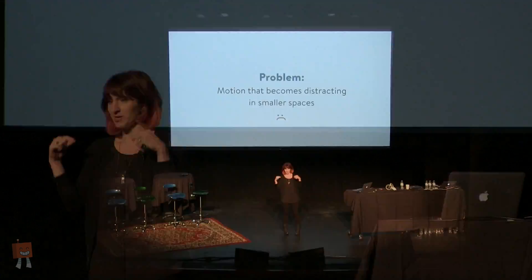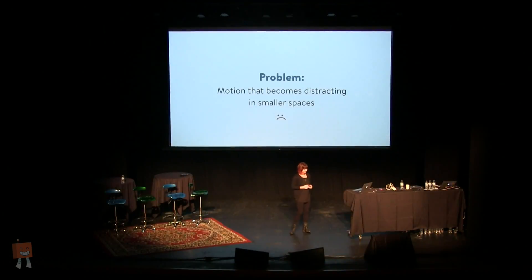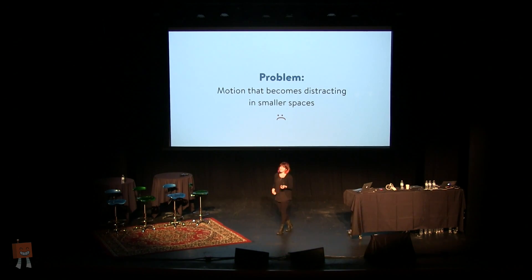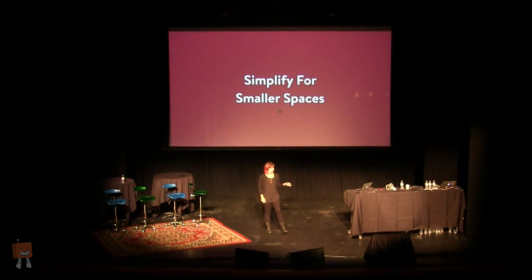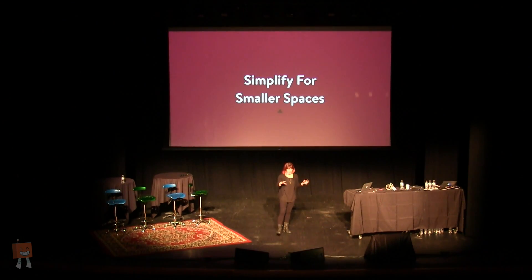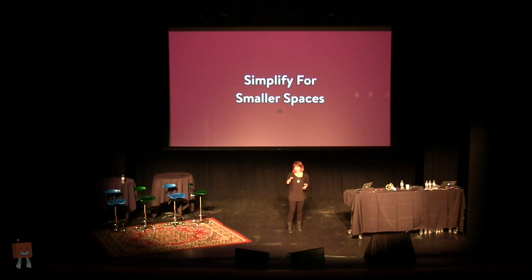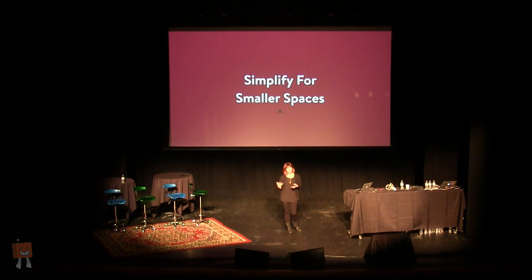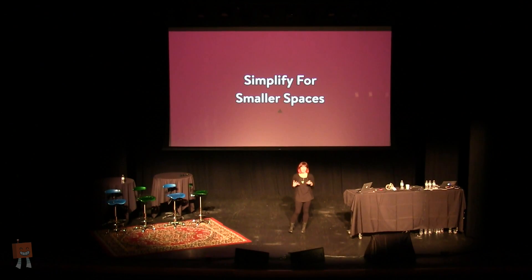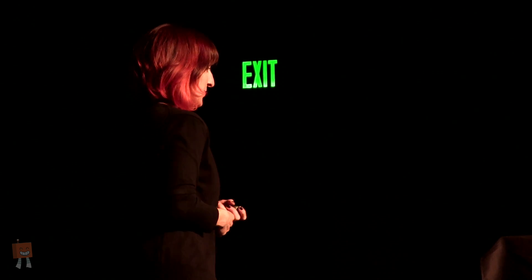The first problem is that motion becomes distracting in smaller spaces. The easiest solution is to simplify motion for smaller spaces, and this particularly applies to animation that moves things around. Not all animation is motion — we can animate things like opacity, color, and blurs, and those don't move. But when we translate things across the screen or up and down, that's motion, and this can get us into problems.